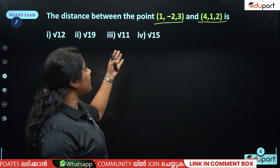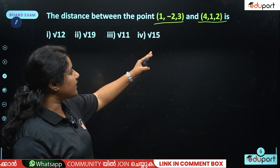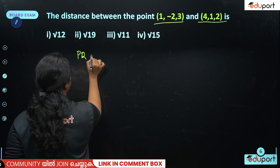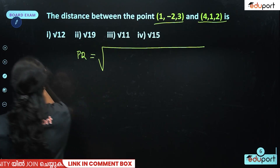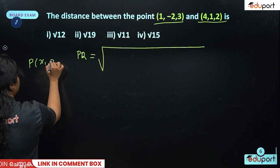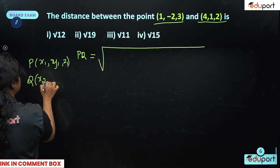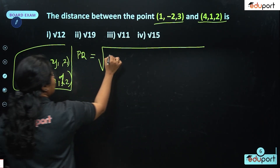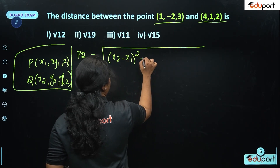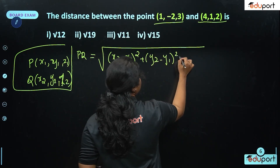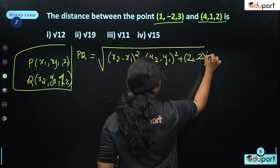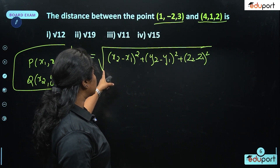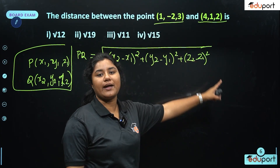The next question uses the distance formula. For points P(x1, y1, z1) and Q(x2, y2, z2), the distance PQ equals the square root of (x2−x1)² + (y2−y1)² + (z2−z1)².